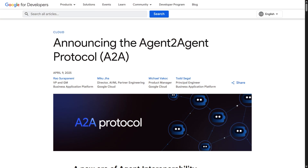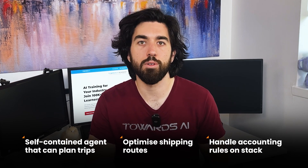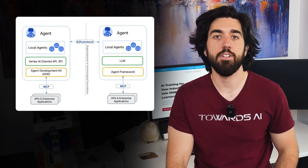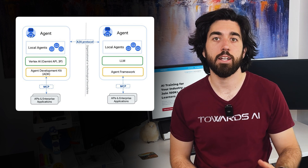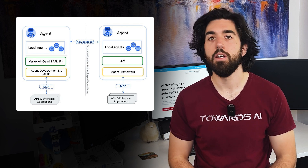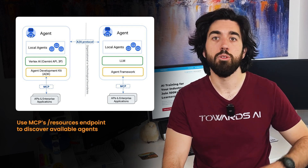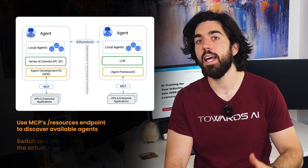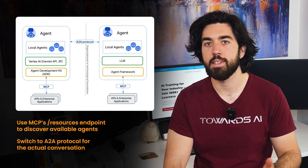Google recently added A2A — the agent-to-agent protocol — which fills the gap MCP deliberately leaves open. MCP lets an agent reach out to tools like a weather API, an SQL query runner, or a PDF parser. But sometimes what you need is another self-contained agent that can plan trips, optimize shipping routes, or handle accounting rules on its own stack. A2A gives those agents a common language: one agent bundles up a task, sends it across the network, and the remote agent answers with results — no shared database or codebase required. The recommended workflow is to use MCP's resource endpoint to discover which remote agents exist, then switch to A2A for the actual back-and-forth conversation between agents.